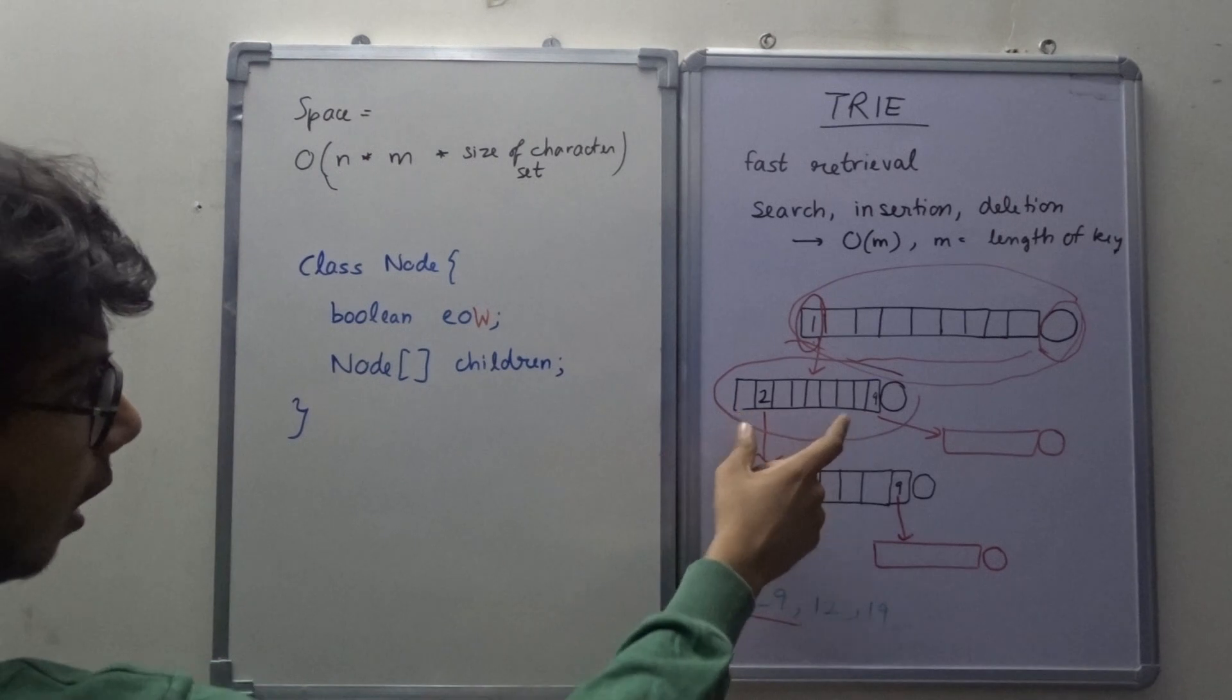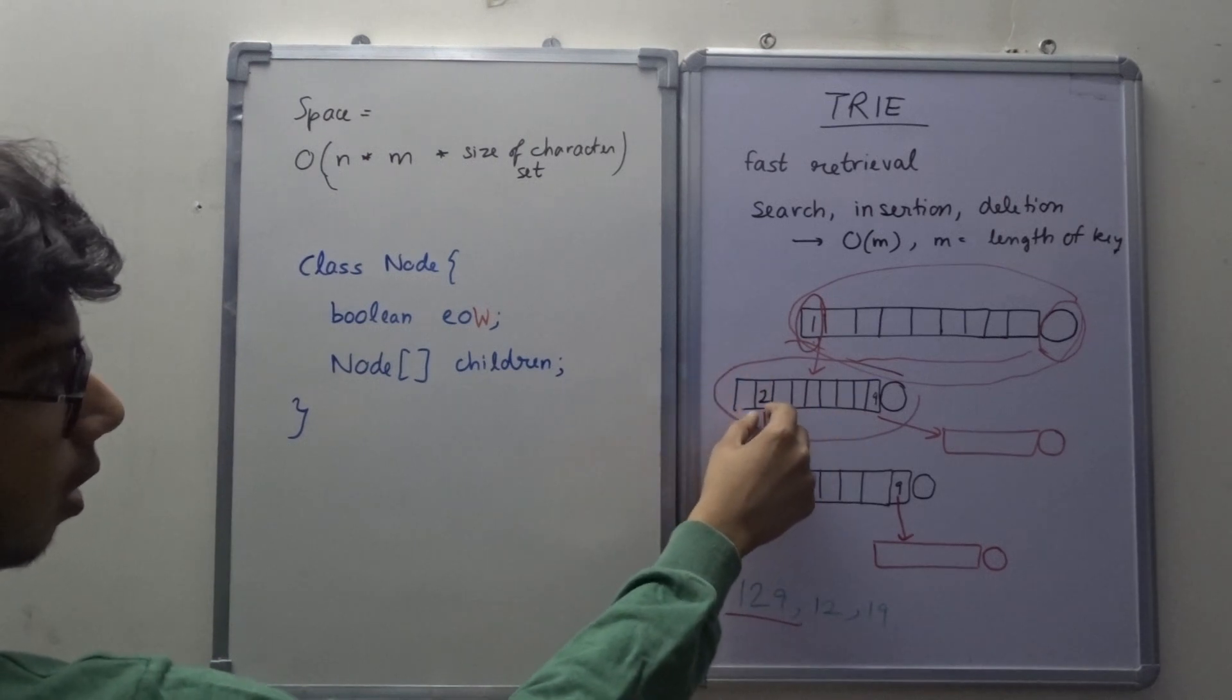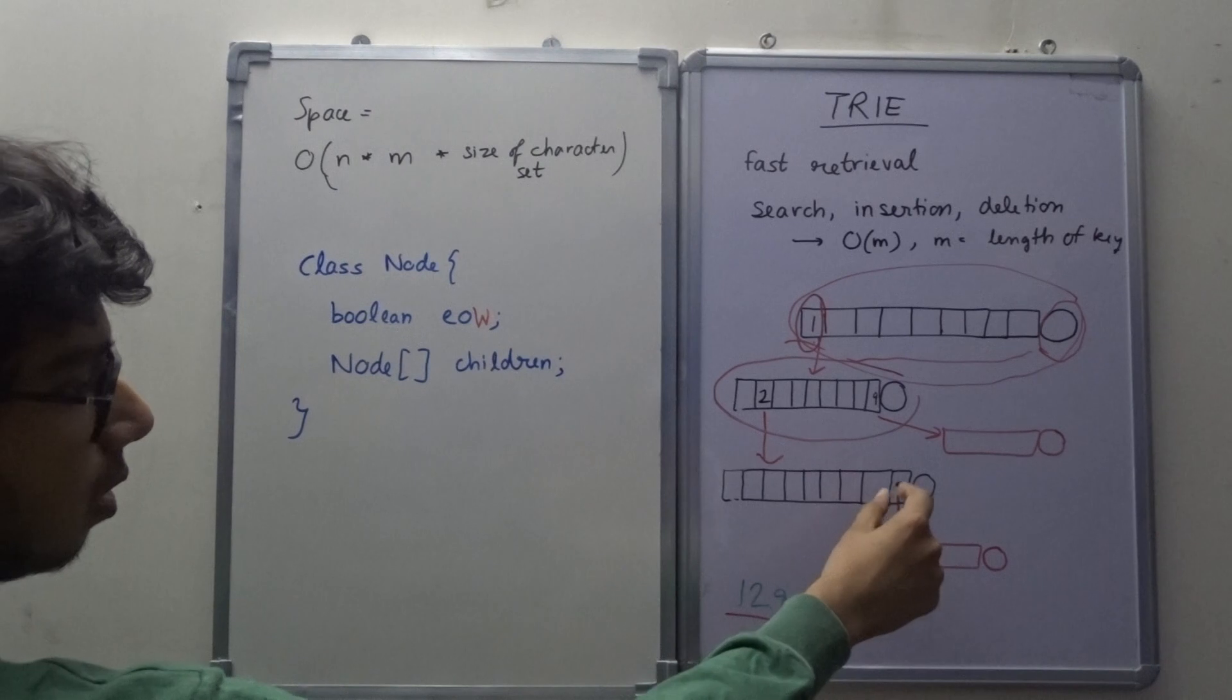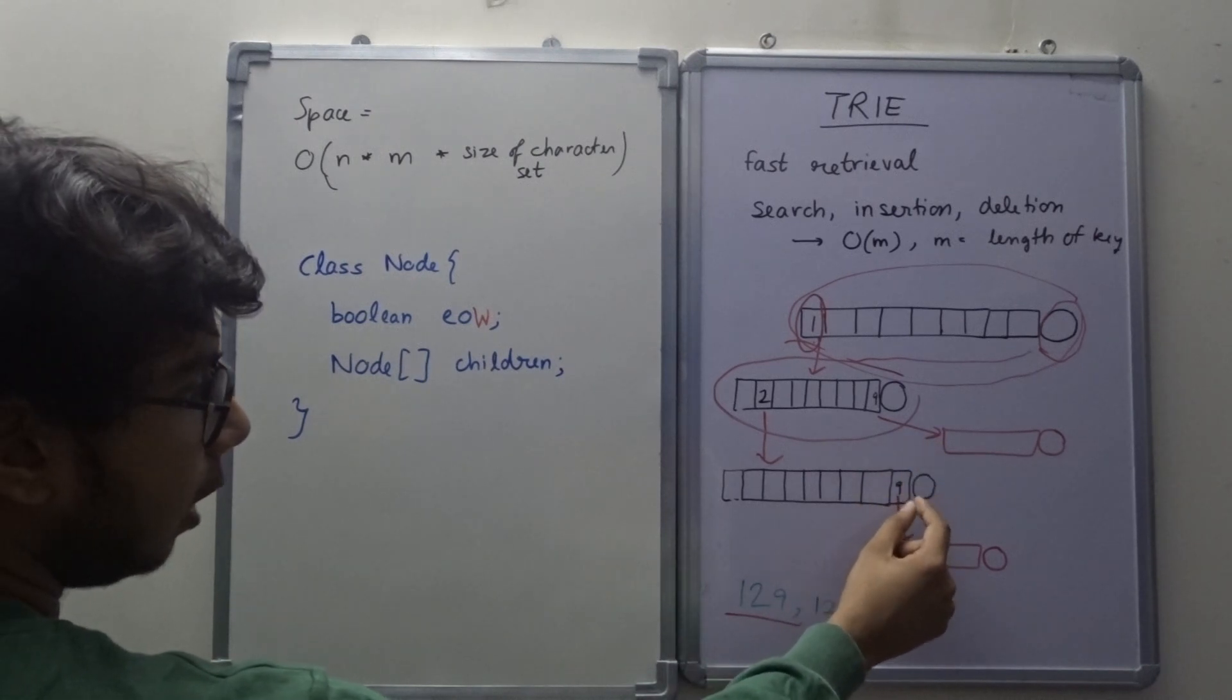So in this child, I assign the index 1 as a new node and in this I assign the index 8 as a new node.